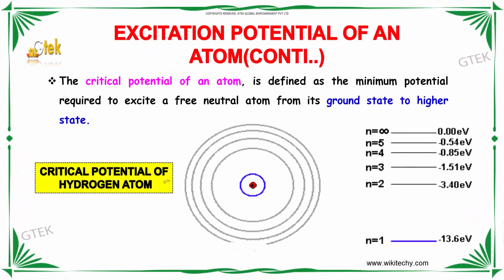The critical potential of an atom is defined as the minimum potential required to excite a free neutral atom from its ground state to a higher state. That is referred to as the critical potential of a hydrogen atom or atom.